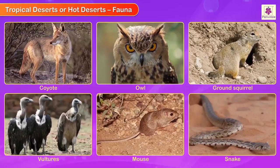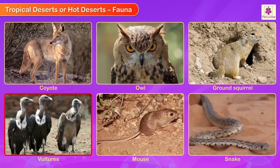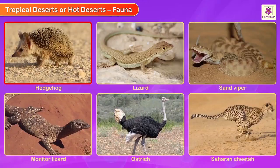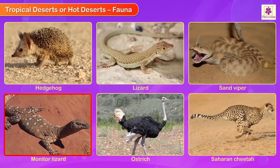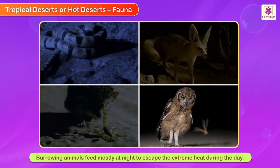Fauna: Animals found in tropical deserts include coyote, owls, ground squirrels, vultures, mice, snakes, hedgehogs, lizards, sand vipers, monitor lizards, ostrich, Saharan cheetahs, and scorpions. Burrowing animals feed mostly at night to escape the extreme heat during the day.